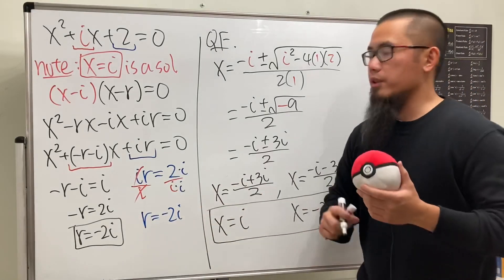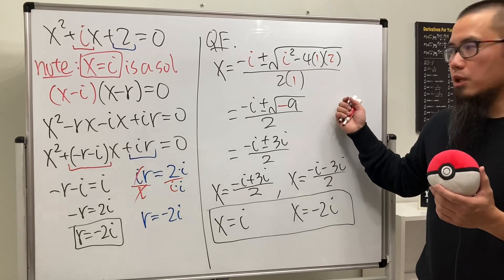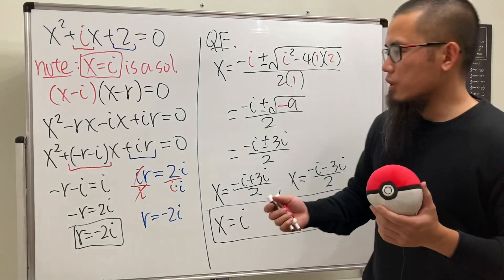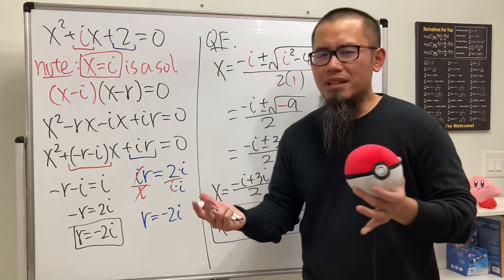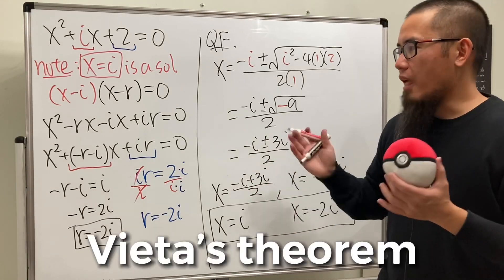Like the one over there. I'm not going to do completing the square because we did the quadratic formula already. This right here is really cool. It actually has a special name for that. It's a special case of, well, I should say a simplified version of what they call Vieta's theorem.